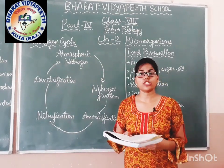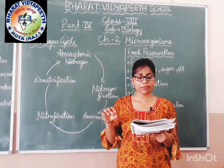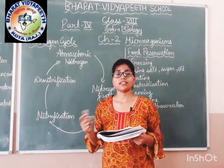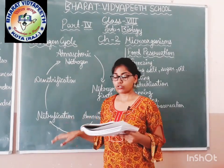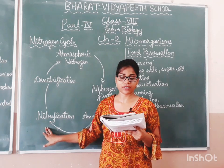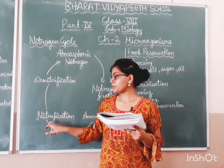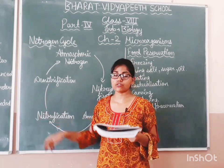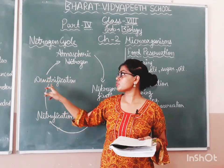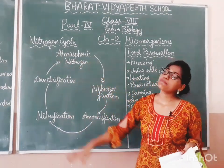In the next step, ammonia salts are acted on by Nitrosomonas bacteria, converting ammonia salts into nitrites. These nitrites are then converted into nitrates by Nitrobacter bacteria. This process is called nitrification. In denitrification, when nitrates are converted back into nitrogen gas, the gas returns to our atmosphere. In this way, the whole nitrogen cycle keeps running.